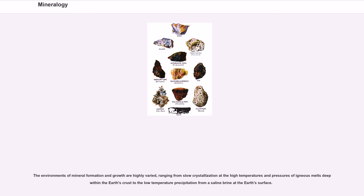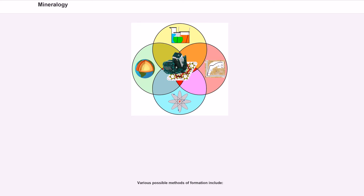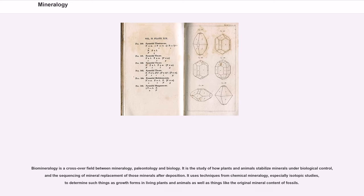The environments of mineral formation and growth are highly varied, ranging from slow crystallization at the high temperatures and pressures of igneous melts deep within the Earth's crust to the low-temperature precipitation from a saline brine at the Earth's surface. Biomineralogy is a crossover field between mineralogy, paleontology, and biology. It is the study of how plants and animals stabilize minerals under biological control, and the sequencing of mineral replacement after deposition. It uses techniques from chemical mineralogy, especially isotopic studies, to determine growth forms in living plants and animals as well as the original mineral content of fossils.